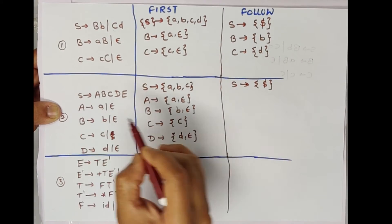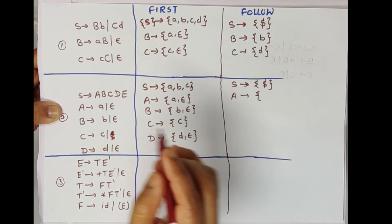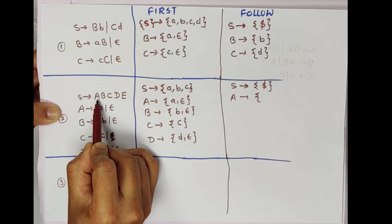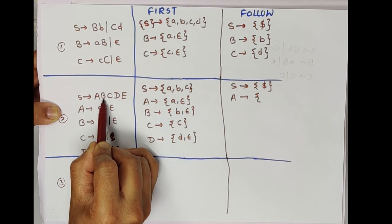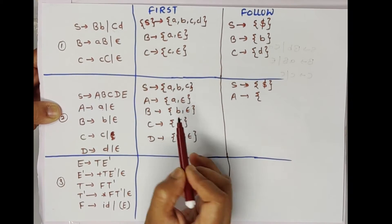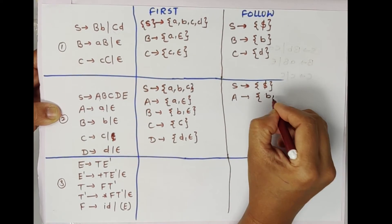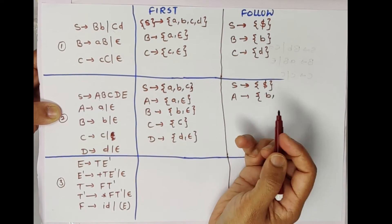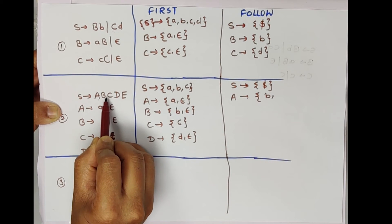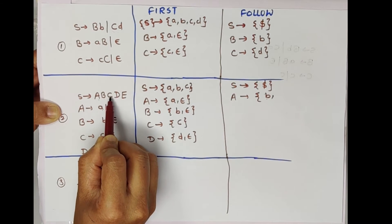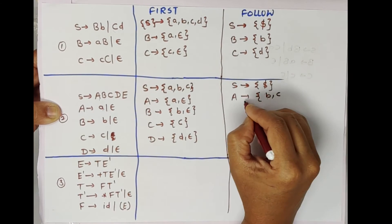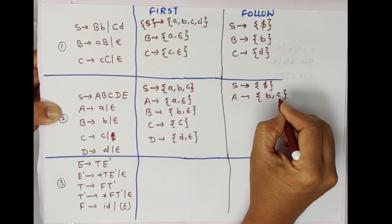Now we will find FOLLOW(A). A is present in the rule S → ABCDE. Who is following A? B is following. So we take FIRST(B) = {b}. We do not take epsilon in FOLLOW. If B is epsilon, then next is C, and FIRST(C) = {c}. So FOLLOW(A) = {b, c}.